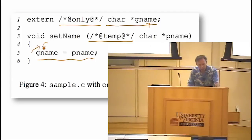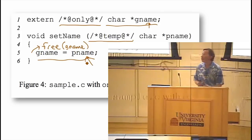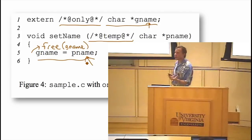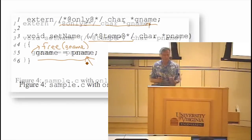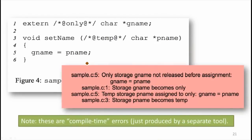We should do a free on the old value before reassigning. But now there's a problem — we'd be assigning it to something that's not 'only.' We would get warnings; these are compile-time errors. So we're trying to check that the code is correct at compile time.